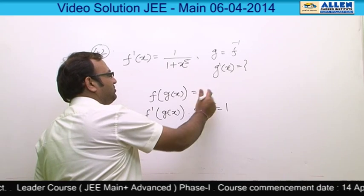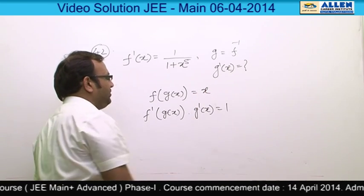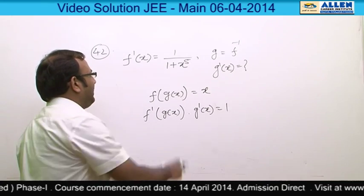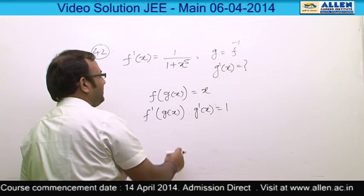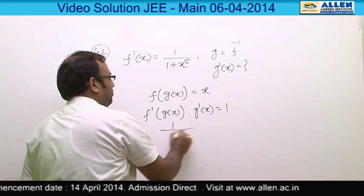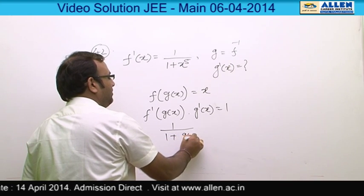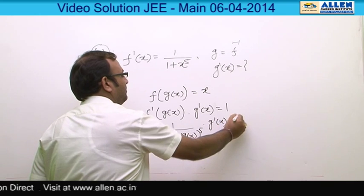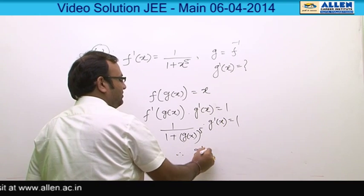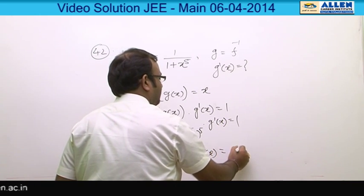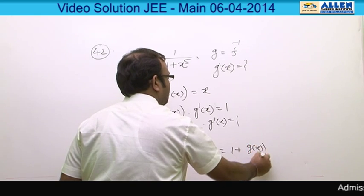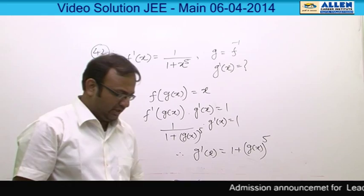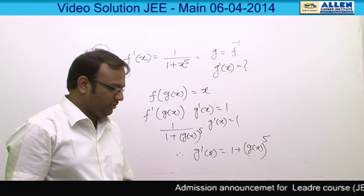Since f(g(x)) = x, differentiating gives f'(g(x)) · g'(x) = 1. Since f'(x) = 1/(1 + x^5), we have f'(g(x)) = 1/(1 + g(x)^5). Substituting, [1/(1 + g(x)^5)] · g'(x) = 1, therefore g'(x) = 1 + g(x)^5. The correct answer is the fourth option.